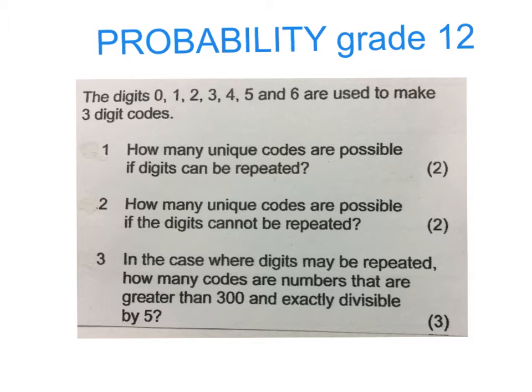In this video we're going to look at a specific probability question in Grade 12 that says the digits 0, 1, 2, 3, 4, 5, and 6 are used to make three-digit codes.